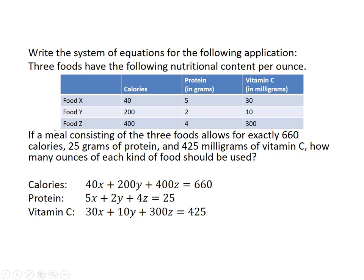Each column of our 3 by 3 table contains the following. The first column is calories: food x has 40 calories, food y has 200 calories, and food z has 400 calories. The second column is protein in grams: food x has 5 grams, food y has 2 grams, and food z has 4 grams of protein.